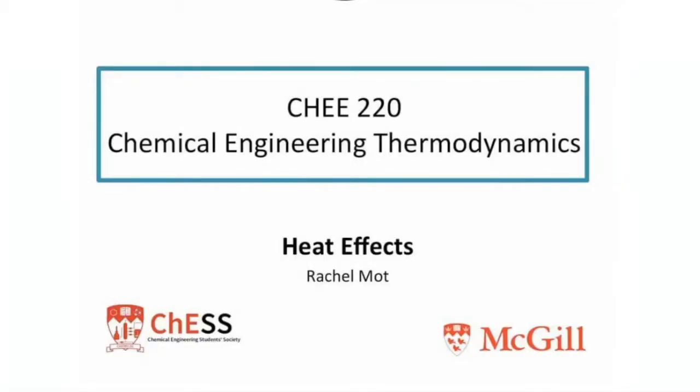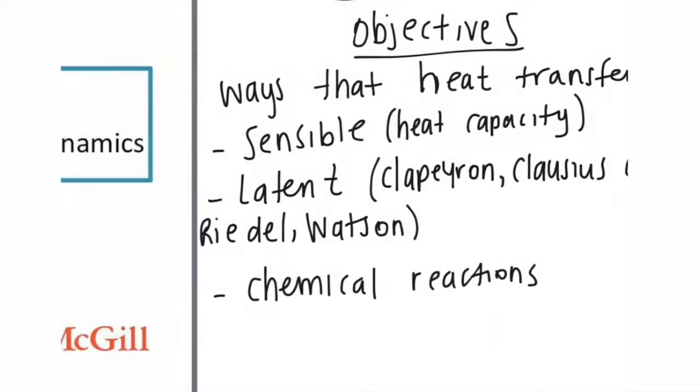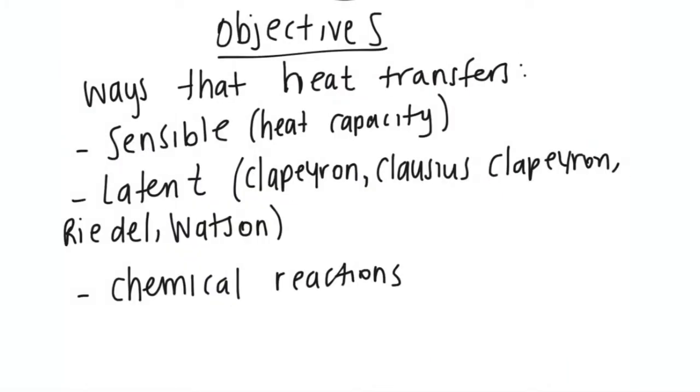Hey guys, so today I want to get into heat effects. What I'm going to be talking about is in a system or with a body, how does heat transfer? There are three different ways: sensible heat, latent heat, and chemical reactions. Today I'm not going to be doing chemical reactions, that's for later on in the course. We're just going to start off with sensible and latent heat.